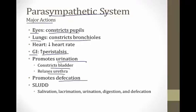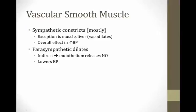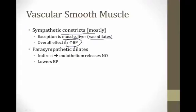Many people remember the actions of the parasympathetic system using the mnemonic SLUD: salivation, lacrimation, urination, digestion, and defecation. Vascular smooth muscle deserves special mention: the sympathetic system constricts it for the most part, with the exception of muscle and liver, where it vasodilates to increase blood flow. The overall effect of sympathetic activation is higher blood pressure.